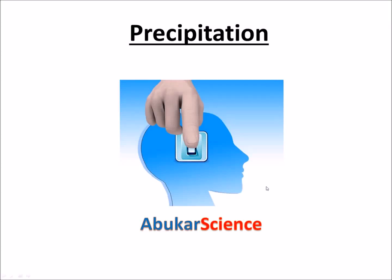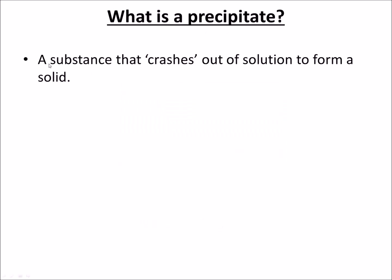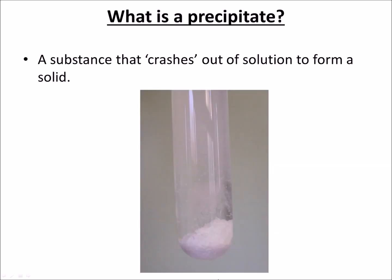Hello and welcome. In this video we're going to be learning about precipitation reactions. In chemistry, a precipitate is a substance that crashes out of solution to form a solid. So if you did a precipitation reaction in school, you might observe something that looks a bit like this. You can quite clearly see here that the white solid at the bottom is our precipitate.